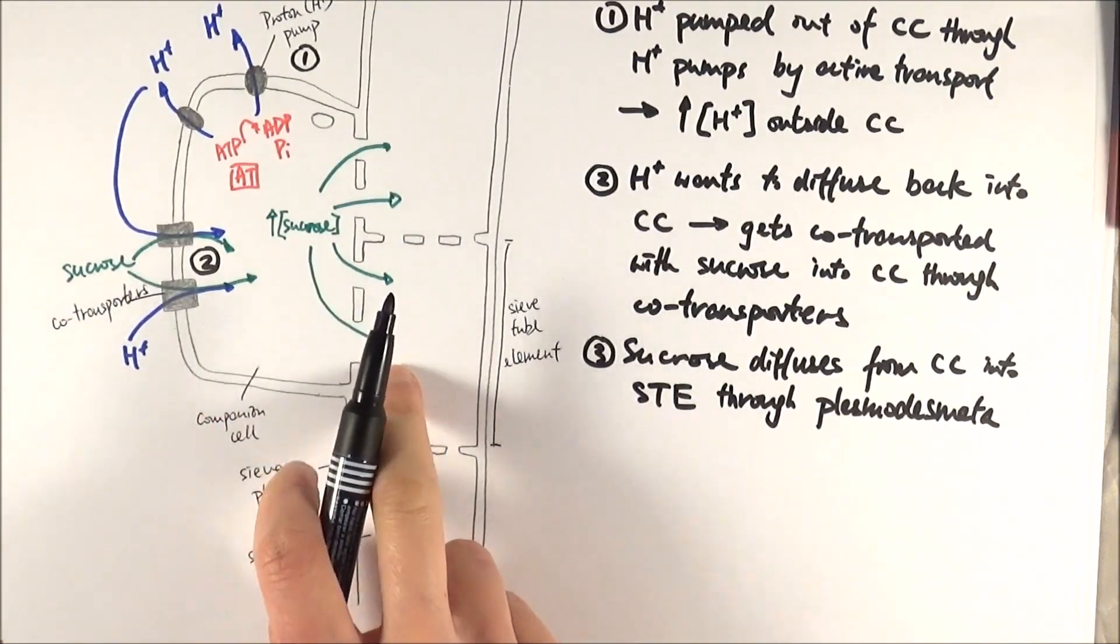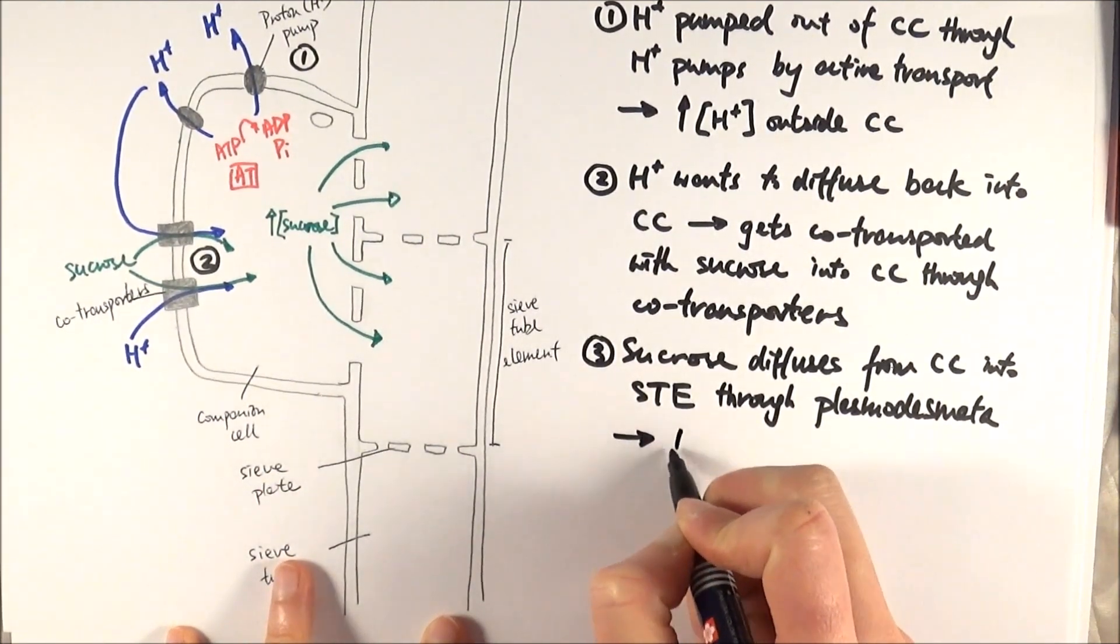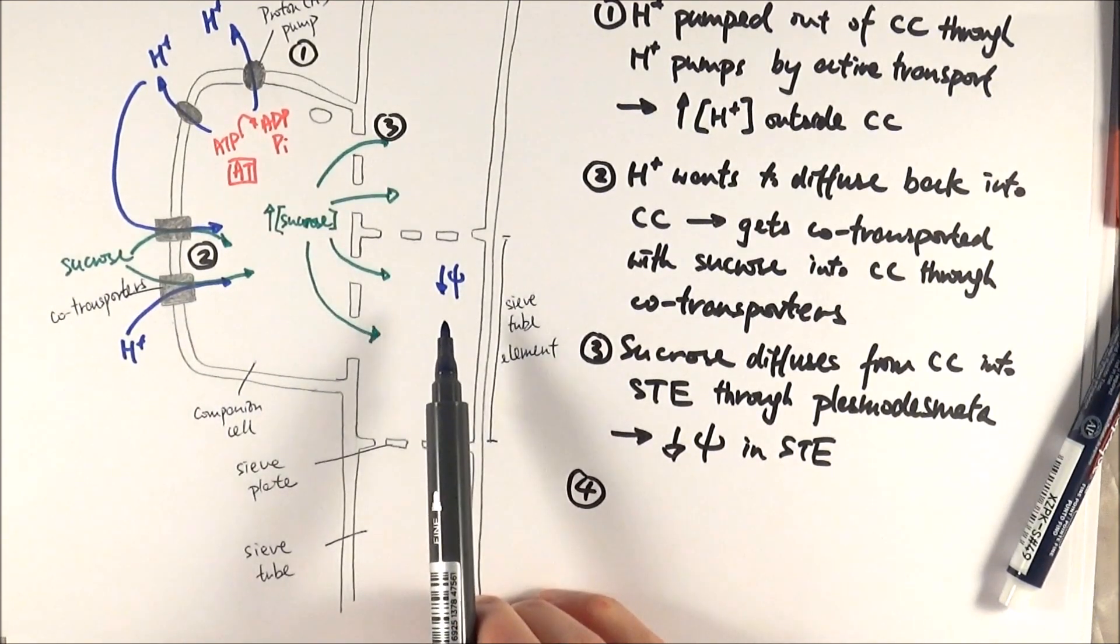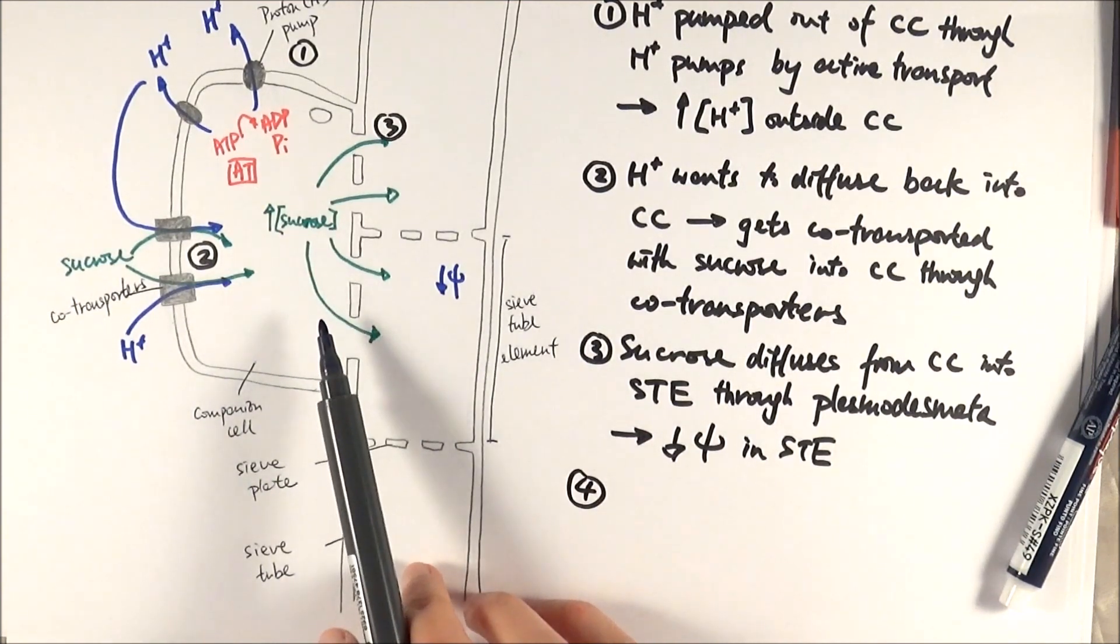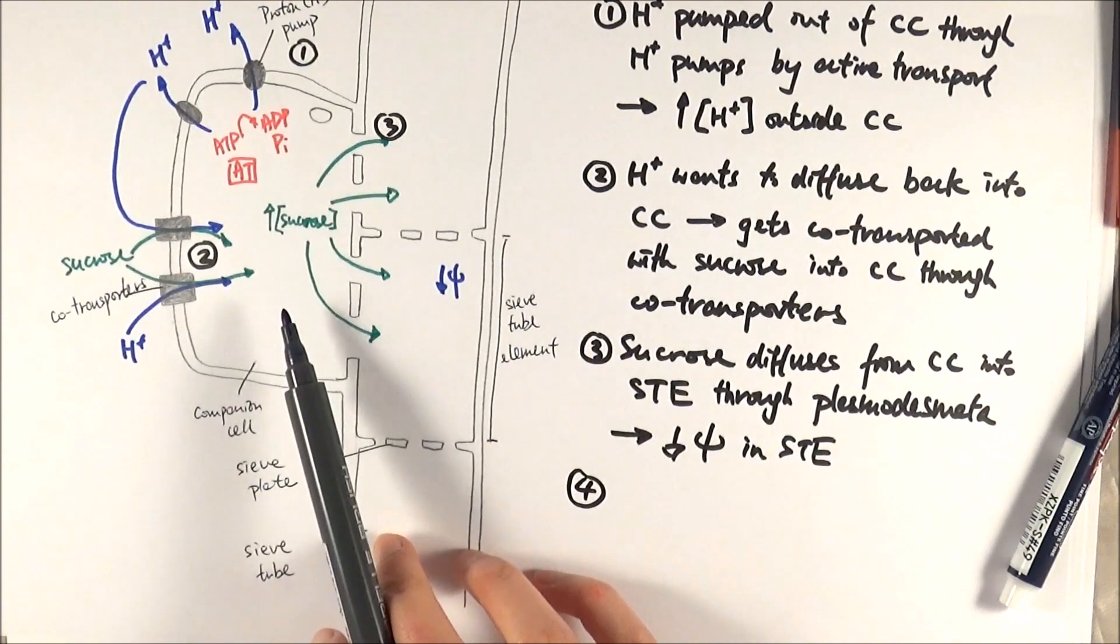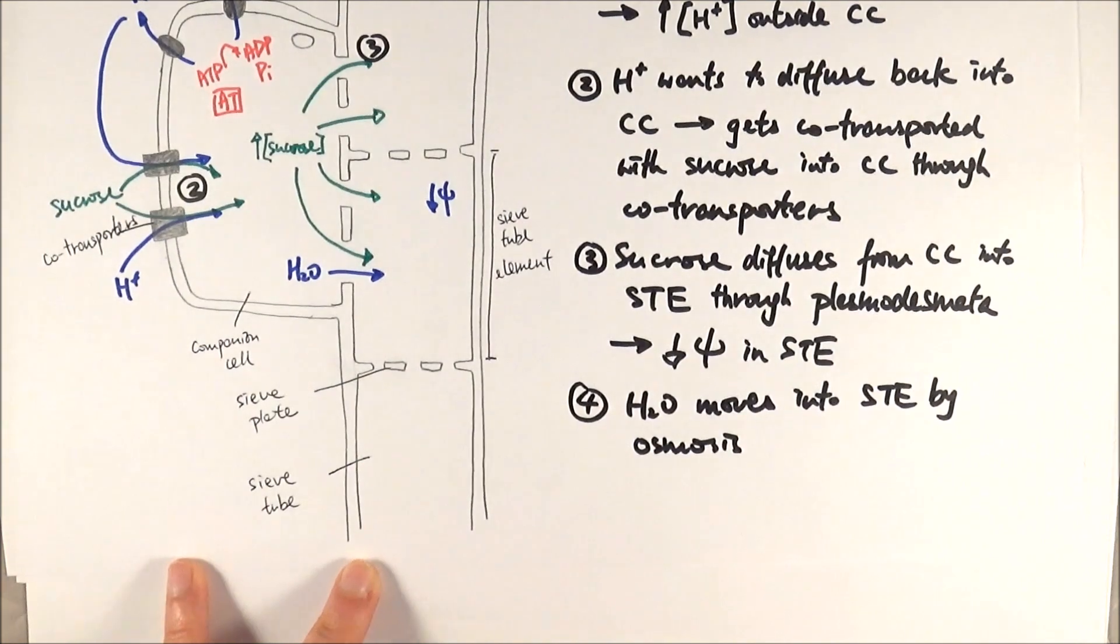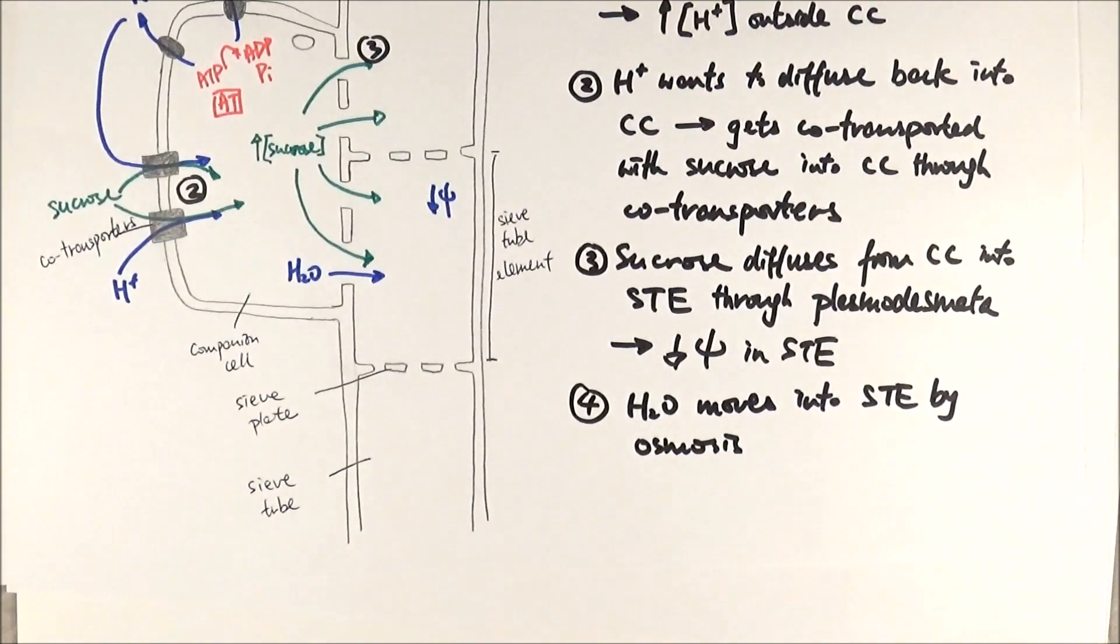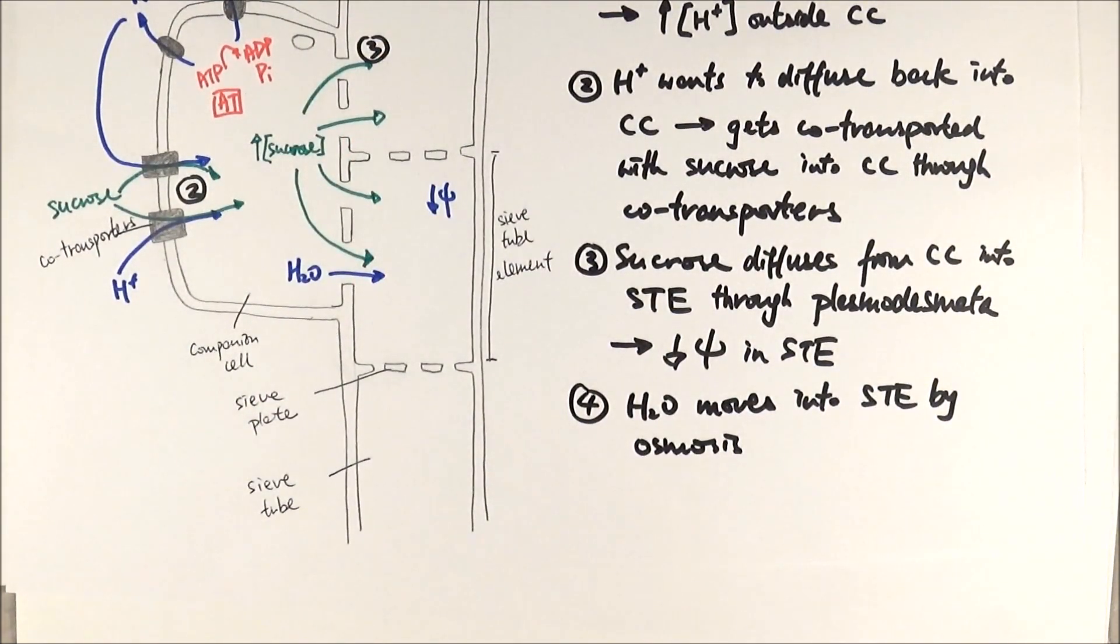Because you're moving more substances into the sieve tube element, you are decreasing the water potential inside. There's more sugar here, so there is a lower water potential inside the sieve tube elements. This will attract water to move from a higher water potential to a lower water potential area. This is an important step because we need more water, as well as the sucrose, to generate turgor pressure. It's by turgor pressure that substances move along the phloem.